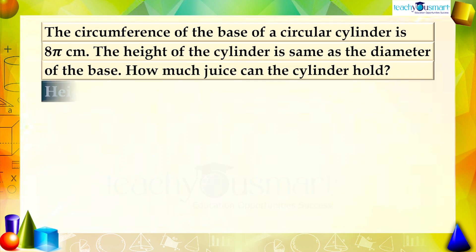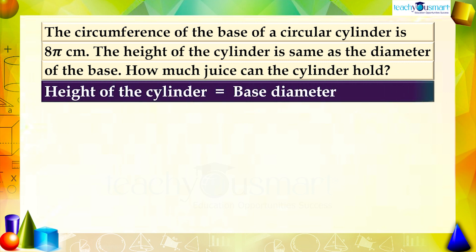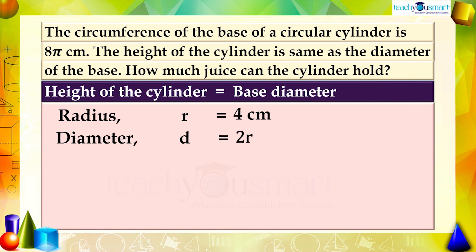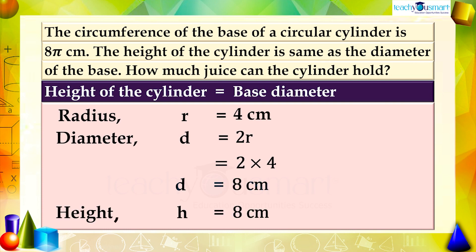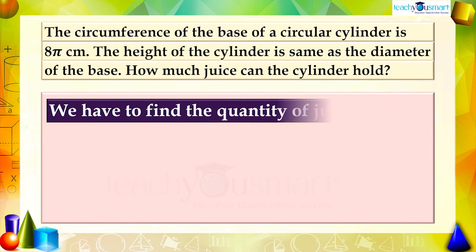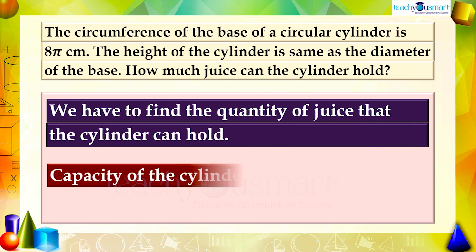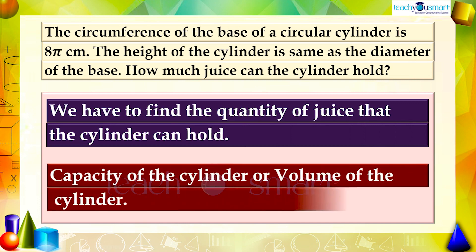Also given that the height of the cylinder equals the base diameter. Since the radius r equals 4 centimeters, the diameter d equals 2r equals 2 multiplied by 4 equals 8 centimeters. That is, height h equals 8 centimeters. We have to find the quantity of juice that the cylinder can hold, that is the capacity of the cylinder or the volume of the cylinder.